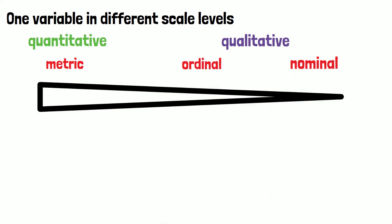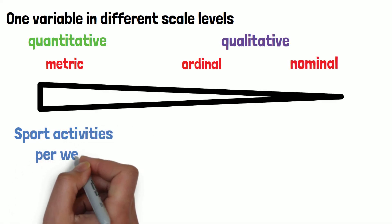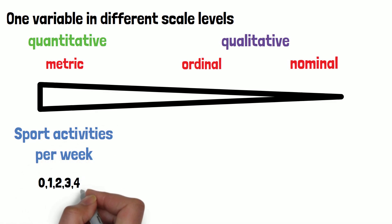Assume for example a study that records the sport activities per week. This would be a metric continuous scale with a value equal or greater than zero.